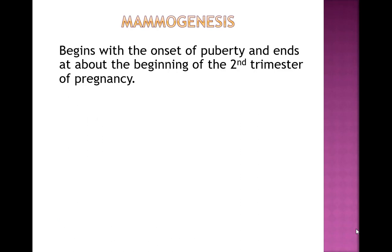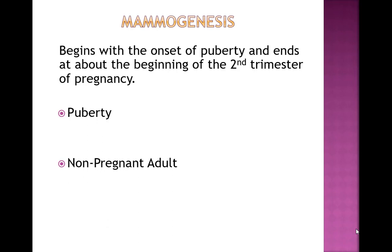In puberty, major breast changes occur right after the first period and are typically complete by 12 to 18 months after the onset of menses. The mammary glands are relatively inactive from that point until pregnancy. The breast might be slightly fuller around 12–16 days before the onset of each menses, but once the woman gets her period and isn't pregnant, the breasts go back to an inactive stage.